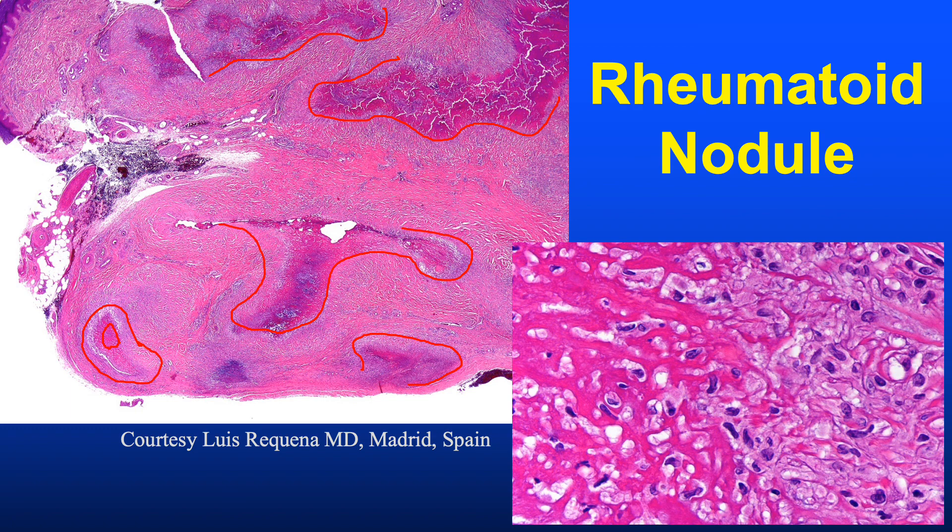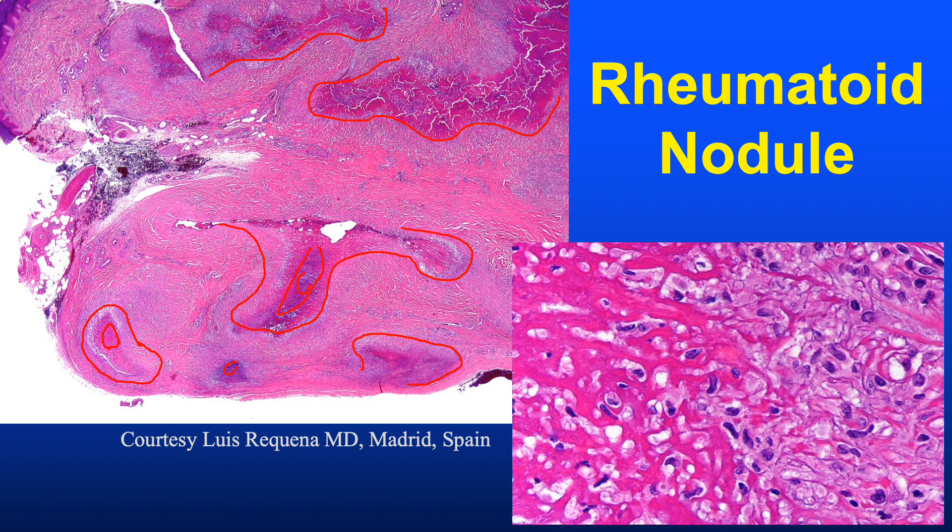Rheumatoid nodule is the last of the palisaded granulomatous reactions we'll discuss today. It typically occurs as deep, often subcutaneous granulomas involving the elbow or finger joints in patients with established rheumatoid arthritis. At low magnification we see large, irregular, palisaded granulomas with fairly bright pink material in the center of the palisades — consistent with fibrin, a hallmark of the rheumatoid nodule. Fibrin has a more homogeneous, liquefied, amorphous appearance compared to necrobiotic collagen, which retains some fibrillary quality. Rheumatoid nodules are characterized by fairly well-organized, large, coalescent palisades of histiocytes, with bright eosinophilic fibrin in the centers — and some variable basophilia from mucin or cellular debris.